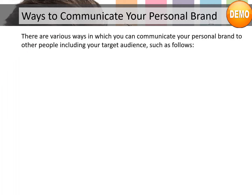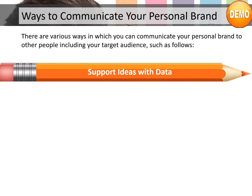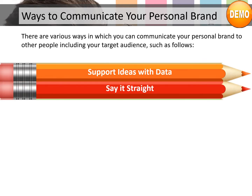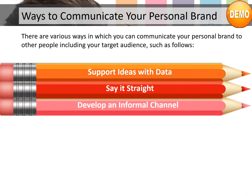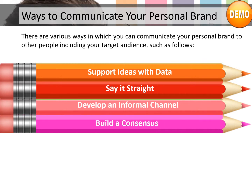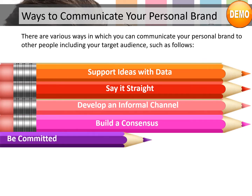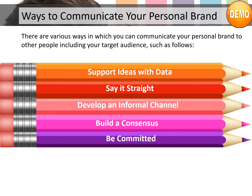There are various ways in which you can communicate your personal brand to other people, including your target audience. These include: support ideas with data; say it straight; develop an informal channel; build a consensus; and be committed. Let's look at each one of them in detail.